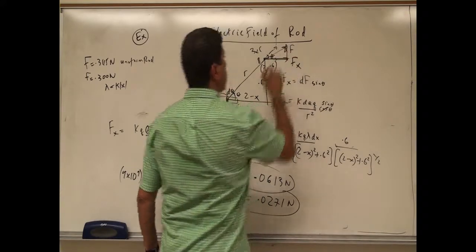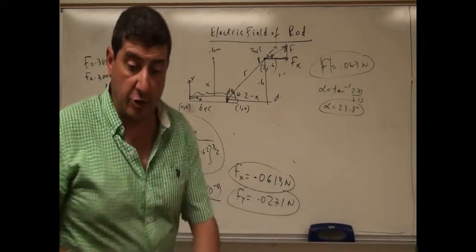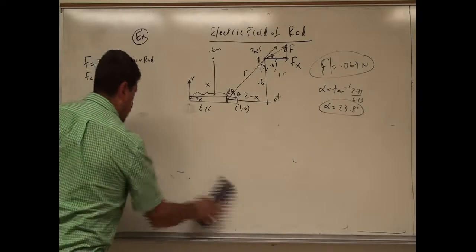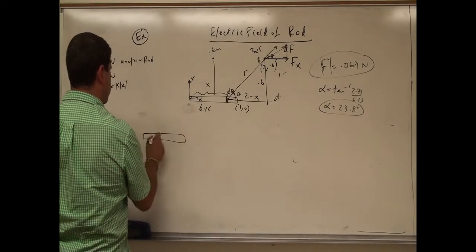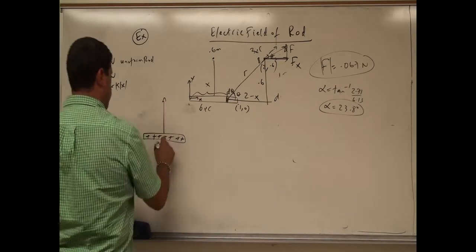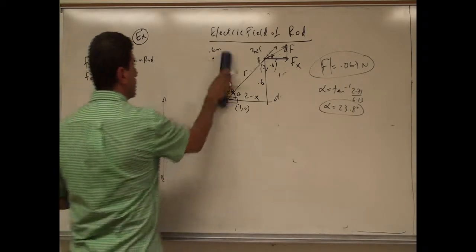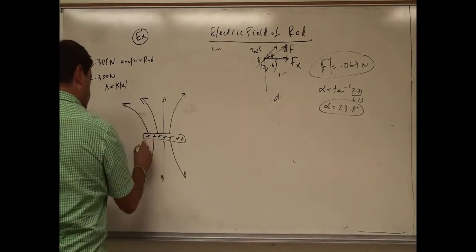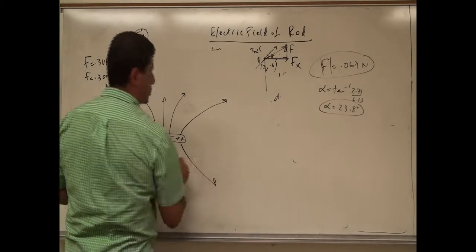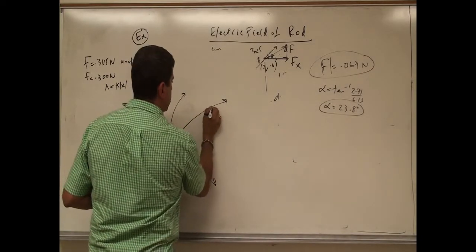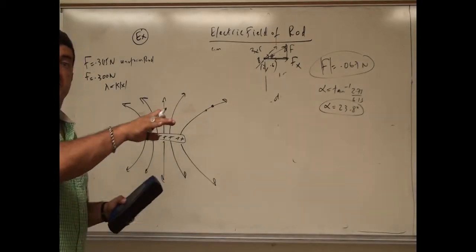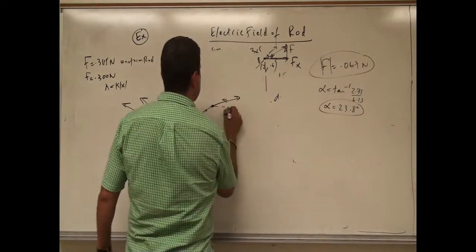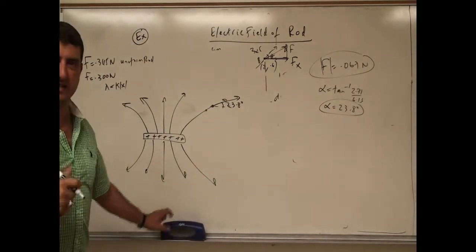To get the total magnitude of the force, we do the square root of fx squared plus fy squared, and we can get the direction as well. The direction of the electric force and the direction of the electric field are the same. Rods like that create electric field that goes straight out in the middle and bends around the edges. The direction of the electrical field came out to be 23.8 degrees.